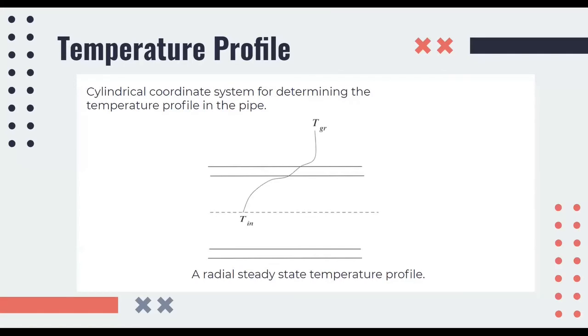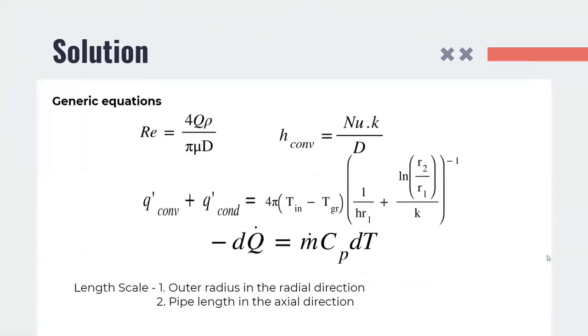Moving on to the temperature profile, we have considered a cylindrical coordinate system for determining the temperature profile in the pipe. The following diagram shows the steady state temperature profile in the radial direction. T_in is the antifreeze temperature, whereas T_GR is the ground temperature. For solving the problem, the generic equations used are as follows.